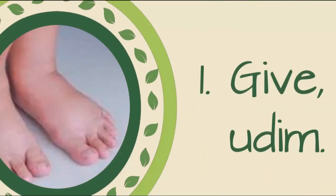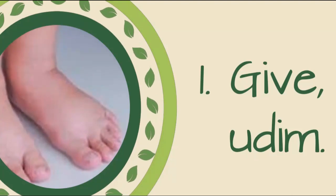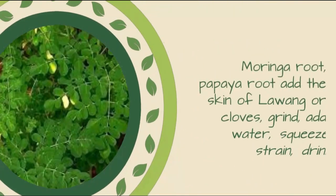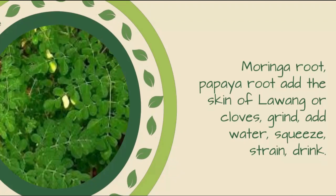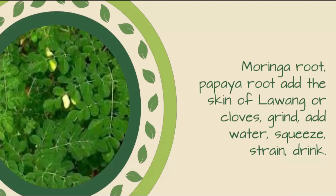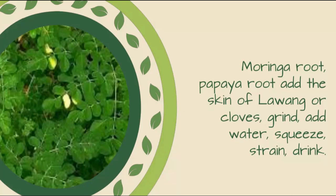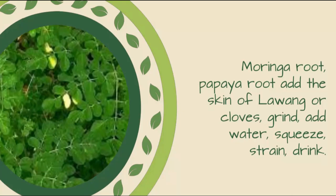1. Give Uden: Moringa root and papaya root, add the skin of lawong or cloves, grind, add water, squeeze, strain, and drink.